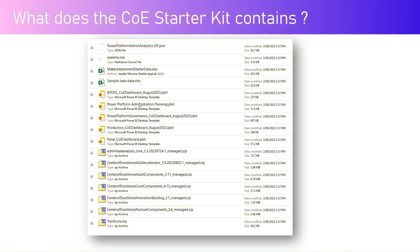In a nutshell, the CoE Starter Kit contains managed solution files, Power BI reports, supporting input data in Excel, a JSON file, and a tool icons zip file which helps you import icons for a canvas app embedded within the solution. That's it — thanks for watching, I'll see you in the next video.